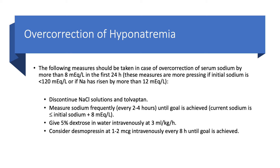This is a very important topic: what do we do in case of overcorrection? This is very common. Over the years I've treated hundreds of cases of hyponatremia, and yet sometimes you overcorrect — because you cannot predict what will happen with urine output. You give a solution based on calculations, but some people start to diurese and you get overcorrection. We need to act if correction is more than 8 mEq/L in the first 24 hours, especially if more than 10 to 12. This matters more if the initial sodium is less than 120.